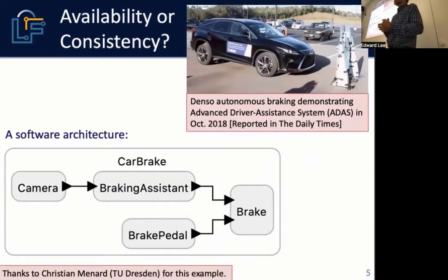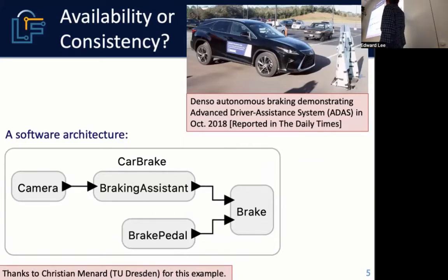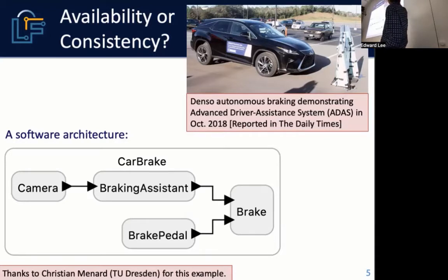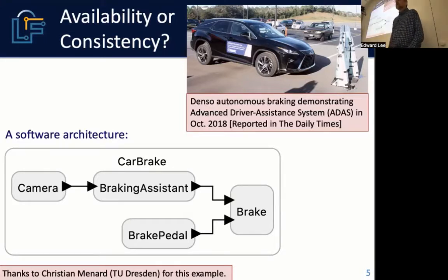ADAS systems — advanced driver assistance systems — include these days things like emergency braking with pedestrian detection based on vision systems. This is a demo of a DENSO ADAS system that is not running over a cardboard mannequin, braking hard even regardless of what the driver is doing as it approaches the mannequin.